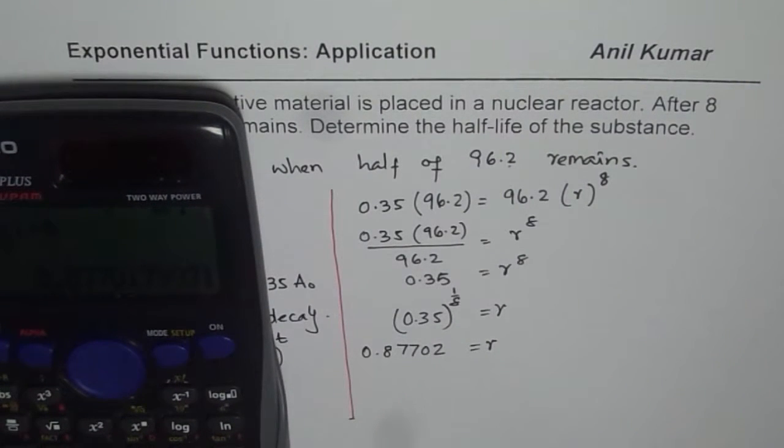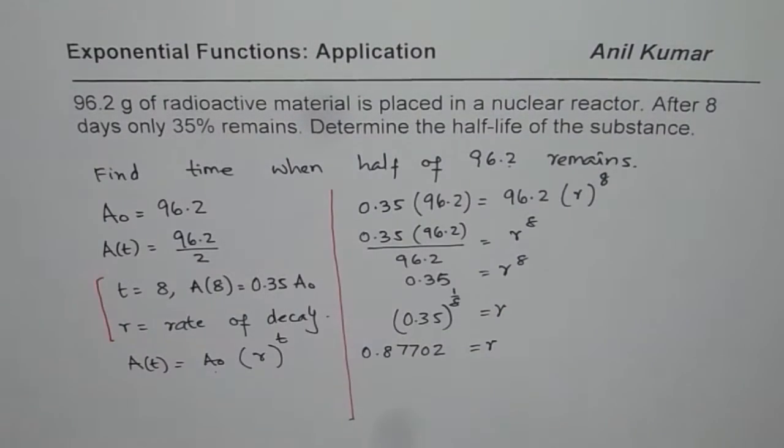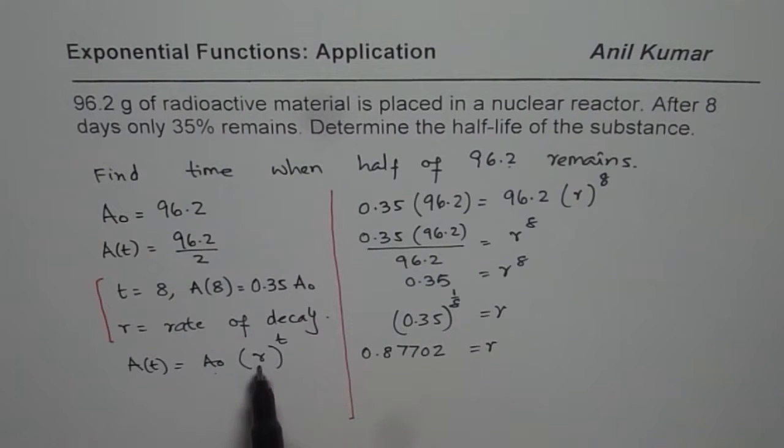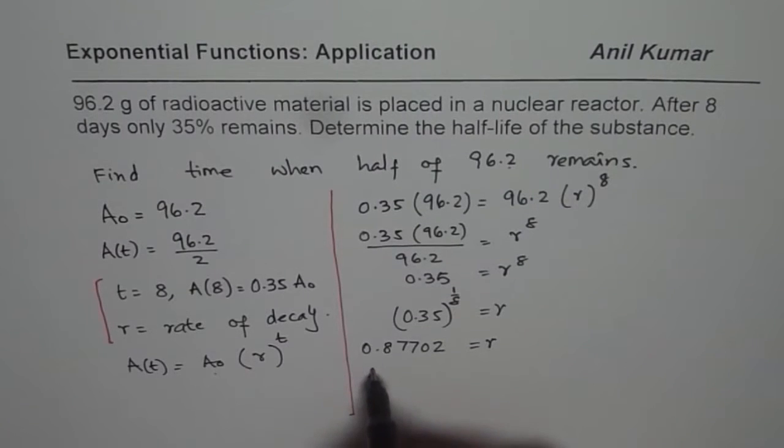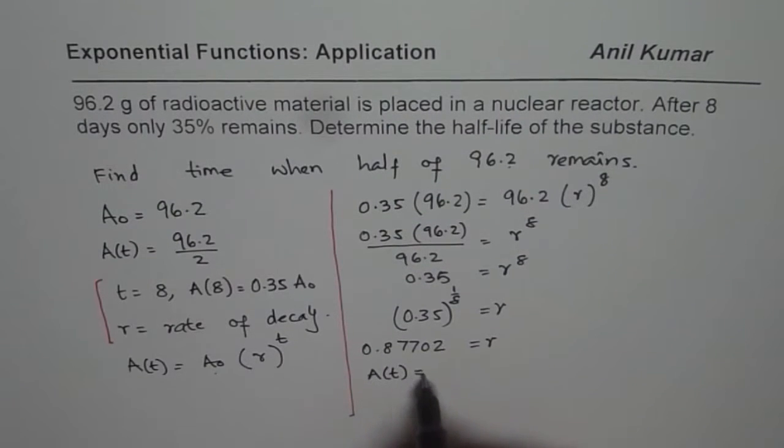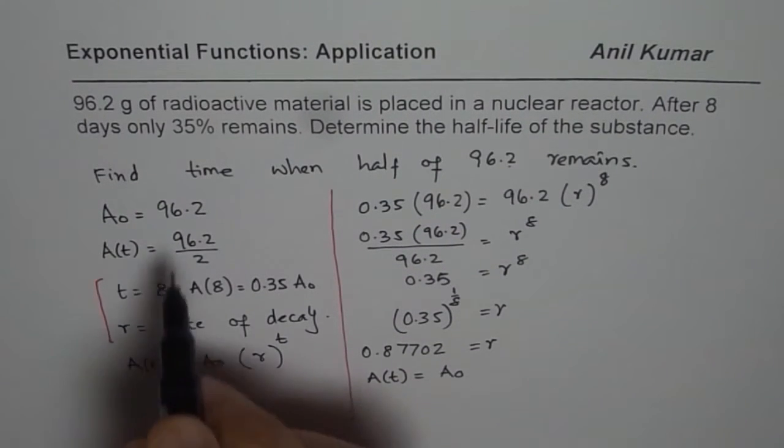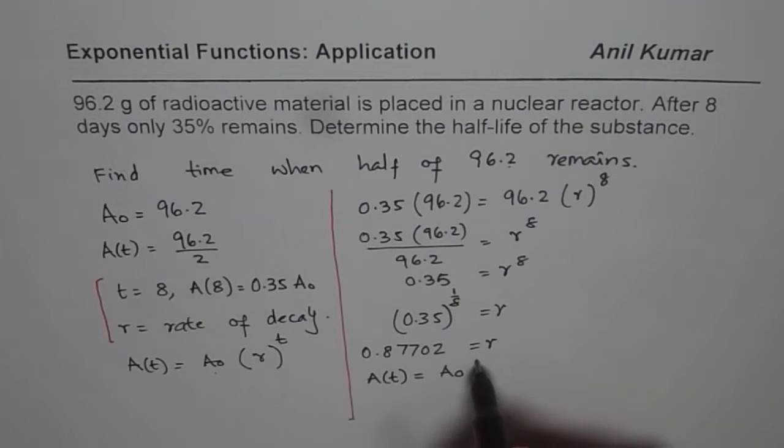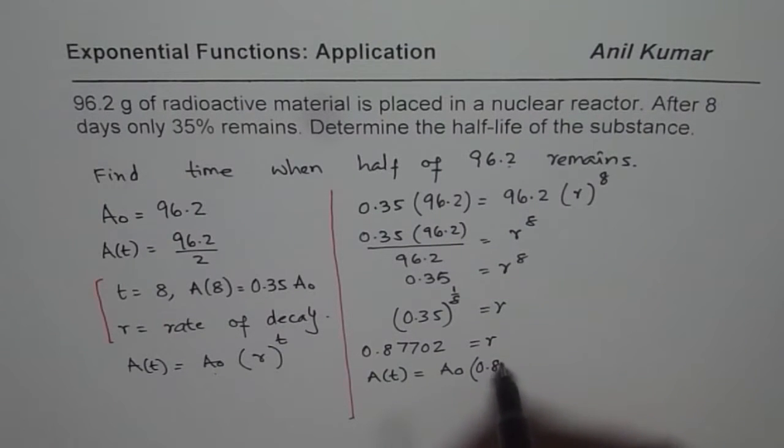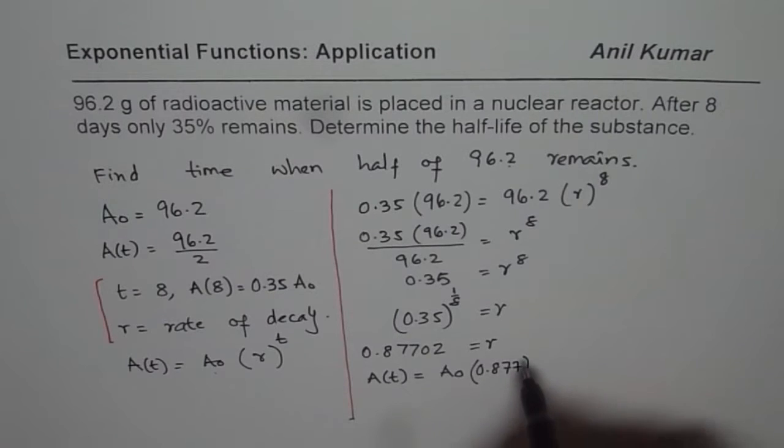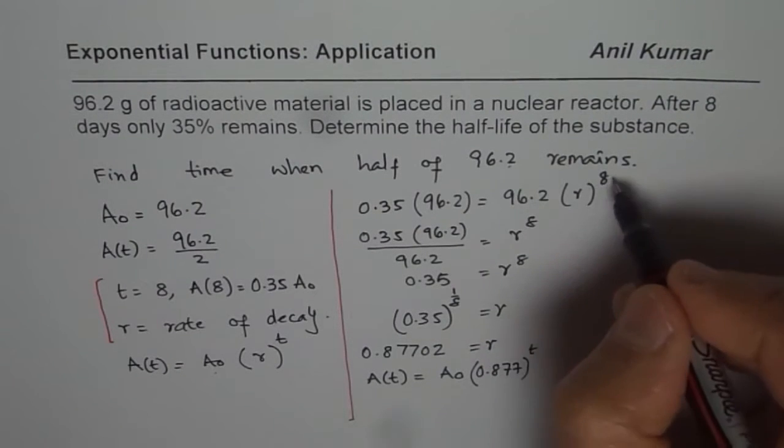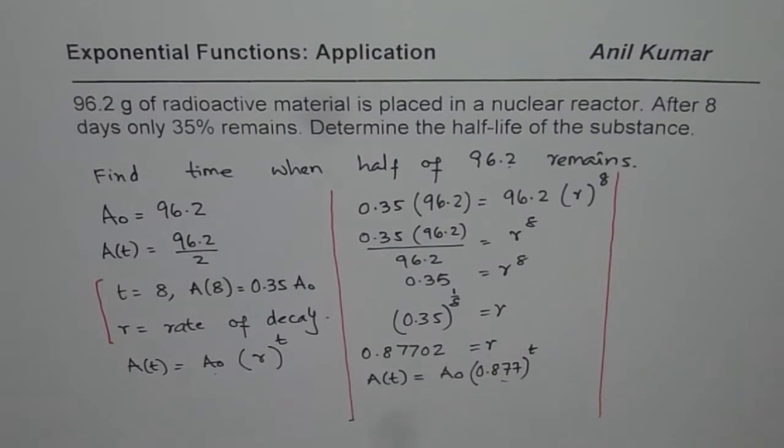So that gives us the equation. And now we can write down the equation with the value of R as equal to 0.877. So we get our equation as A of t is equal to A0, which is 96.2 for us. And the R value is 0.877 to the power of t. We will use this equation. Basically, we are going to use the value of R now.